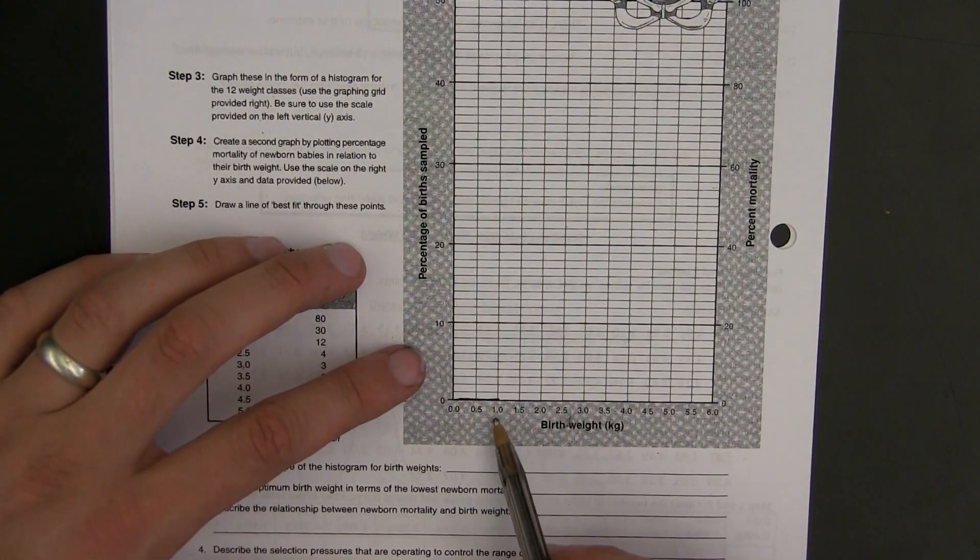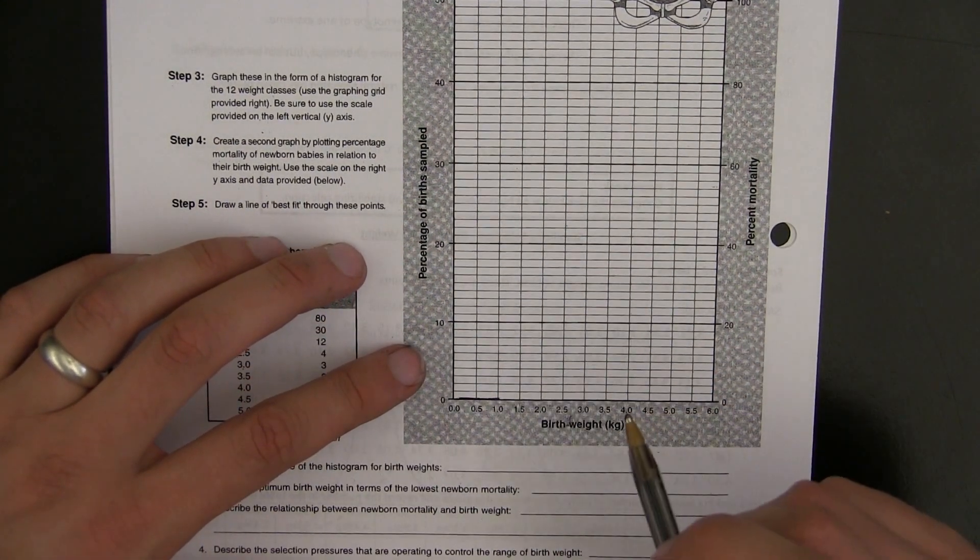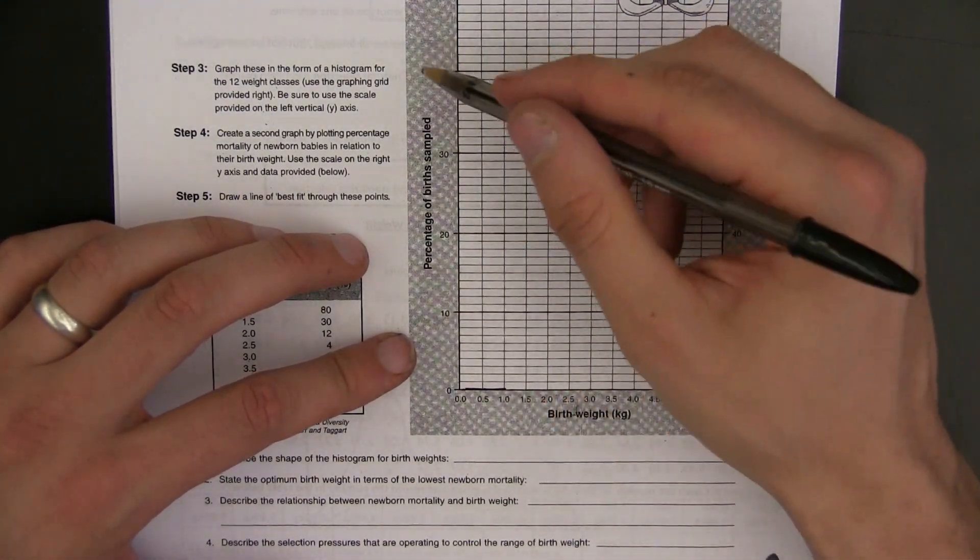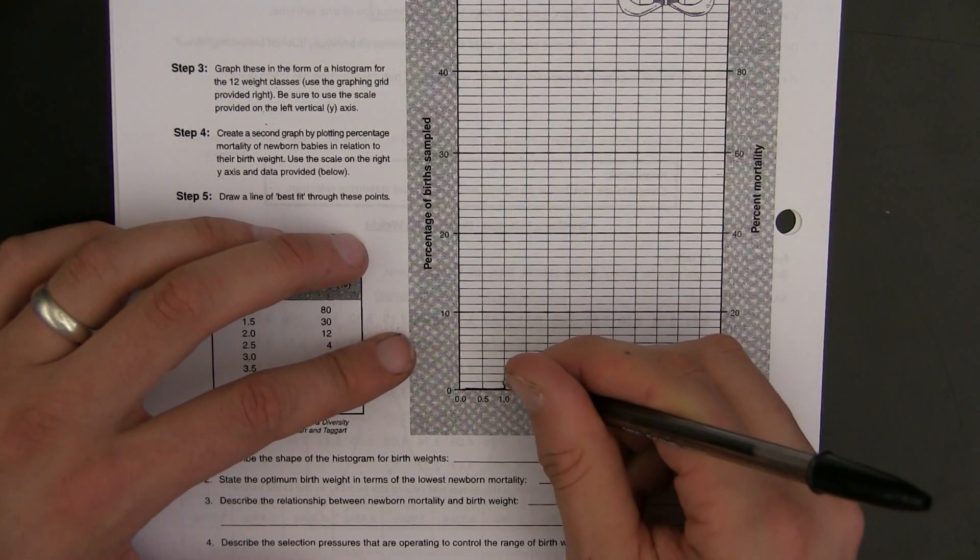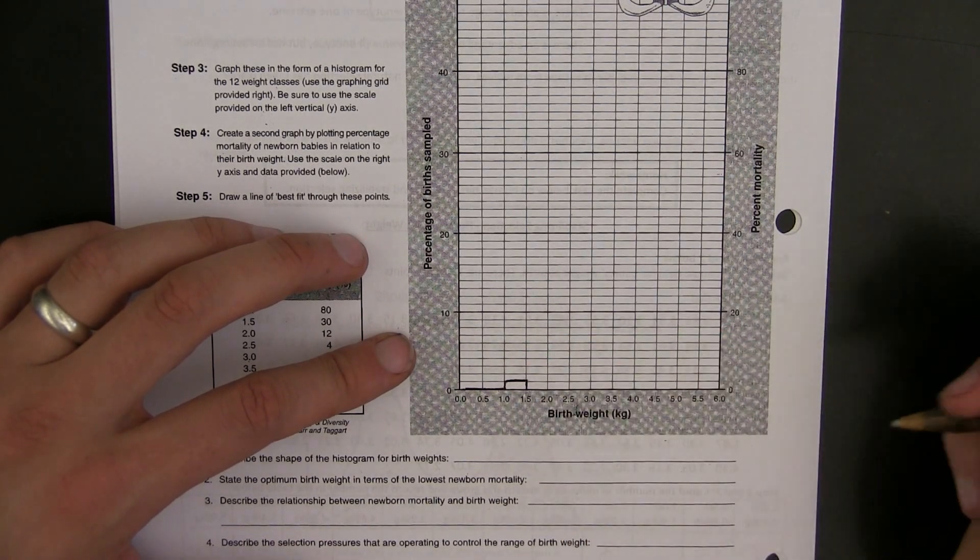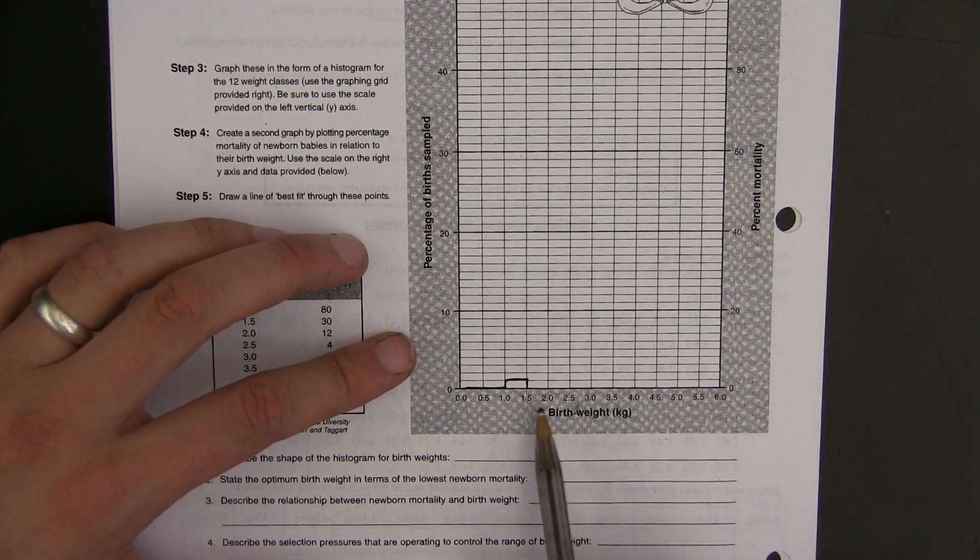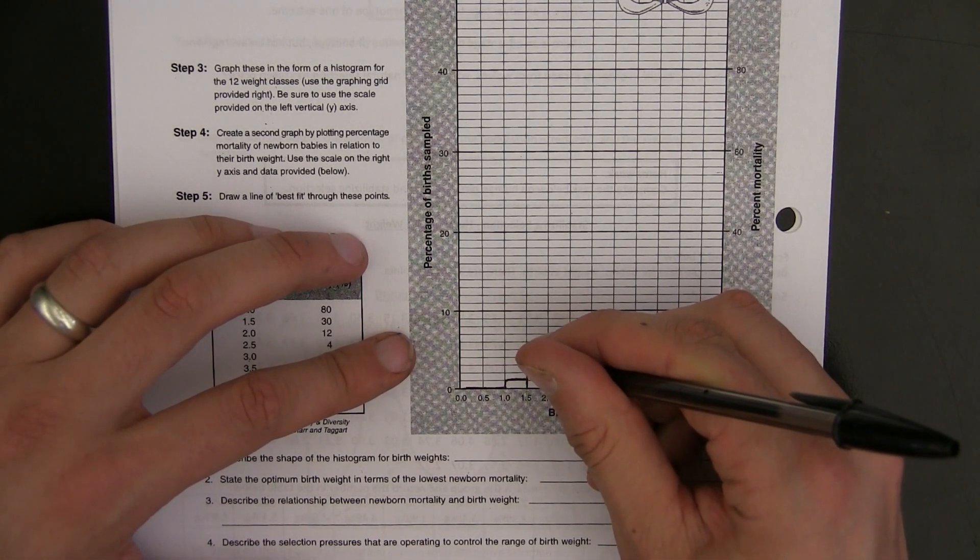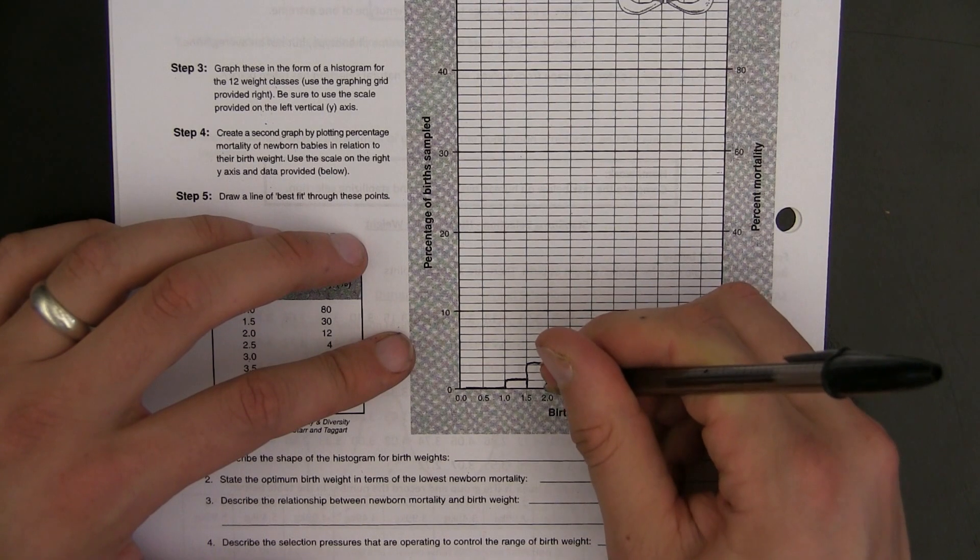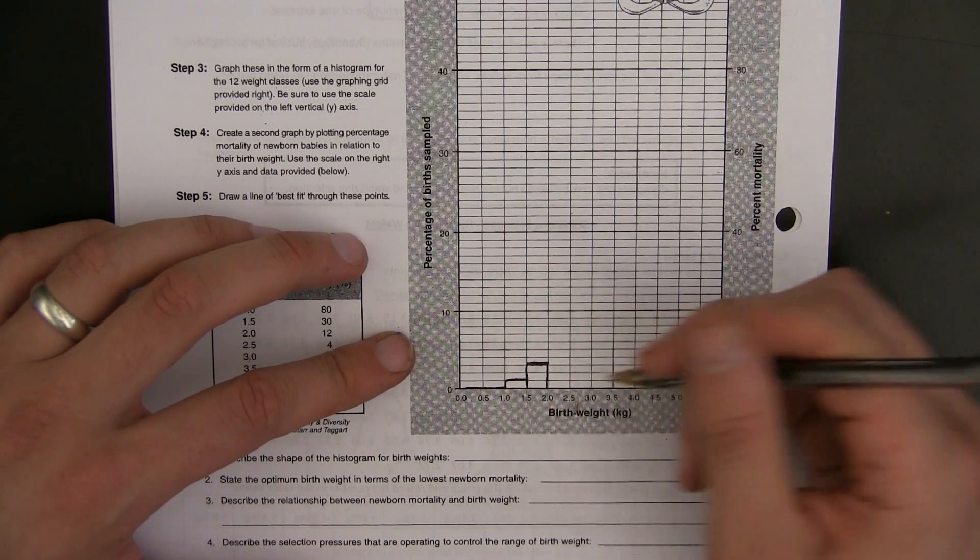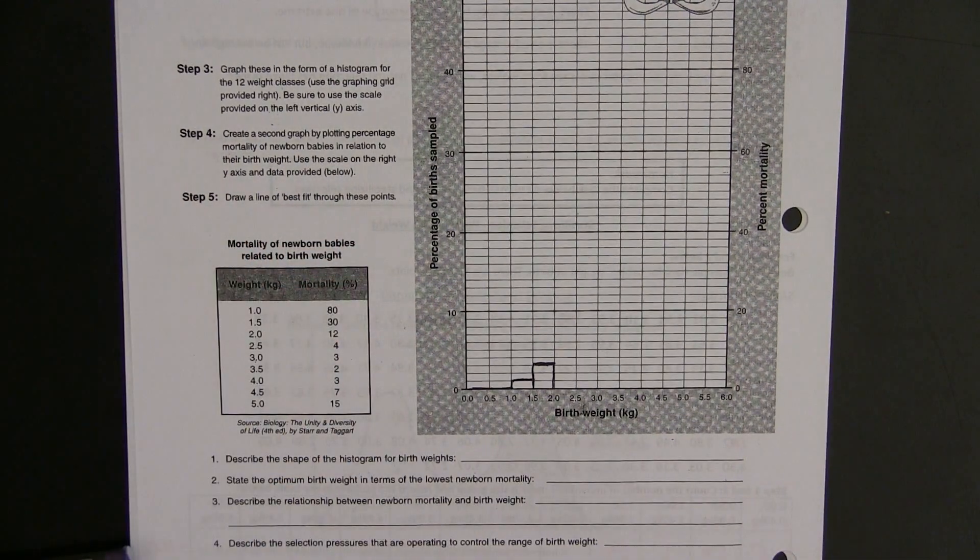However, from 1 to 1.5, there was one baby born. So we're using the left-hand side y-axis here to show that one baby was born at that mass. From 1.5 to 2, three babies were born. You should do this with a ruler. I don't have mine to hand right now.